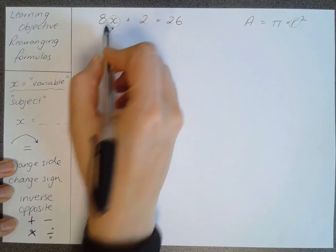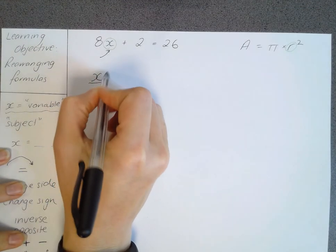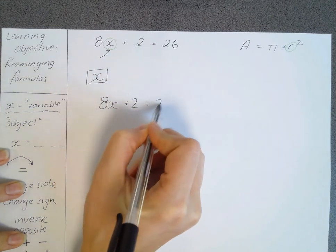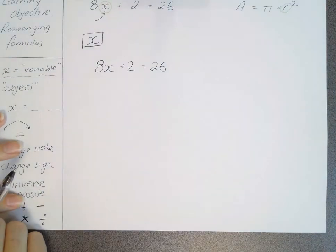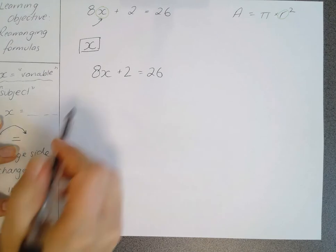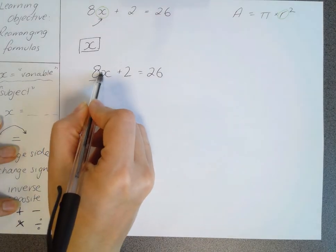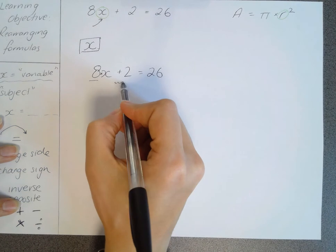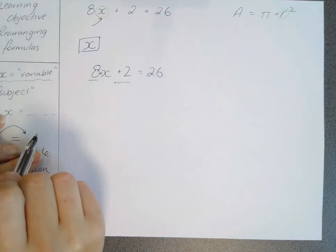Let's rearrange this. We want to make x the subject somehow. So to start with 8x plus 2 equals 26, we are trying to move everything away from the x. It's hard to move the 8 away first because at the moment it's stuck to it with the times. So we're going to move this thing further away from the 8x away.